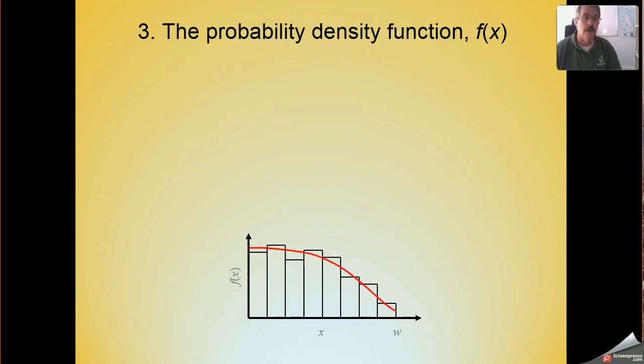Our third and final way of thinking about the detectability process and how that allows us to estimate population size introduces yet a third quantity. This one is now known as the probability density function. And instead of the letter g denoting it as the detection function did, we're now going to use the letter f. And f is going to stand for this probability density function.